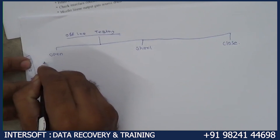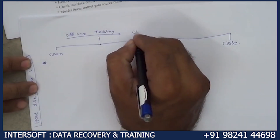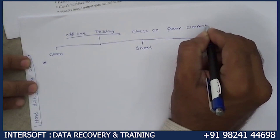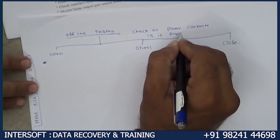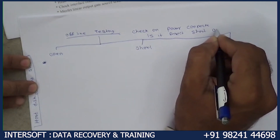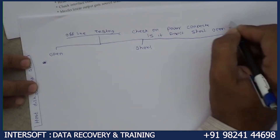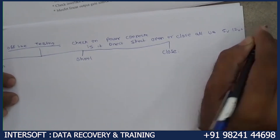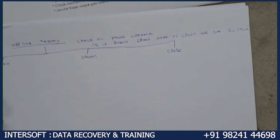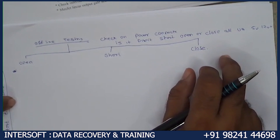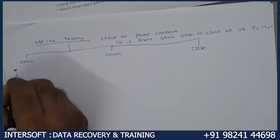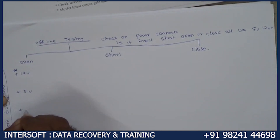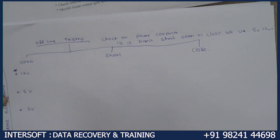We have to check all the power. First of all, check the power connector — is it directly short, open, or close? All voltages: 5V, 3.3V, and 12V. We have to check all these three voltages — open, short, or close. First we will check plus 12V, then plus 5V, and for SATA we will check plus 3.3V.